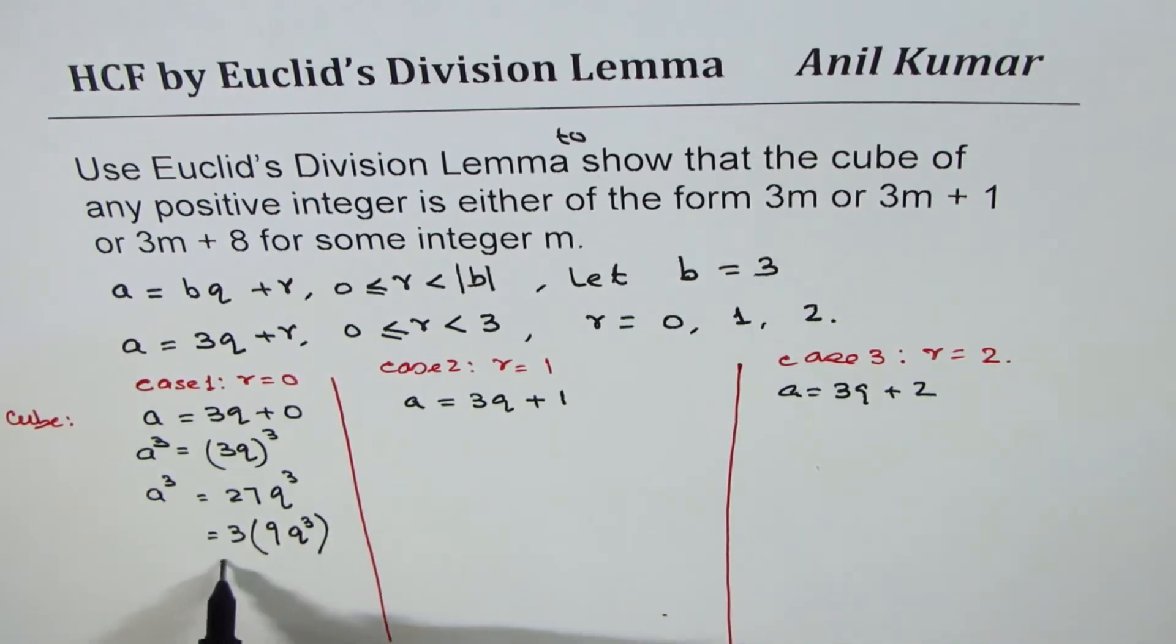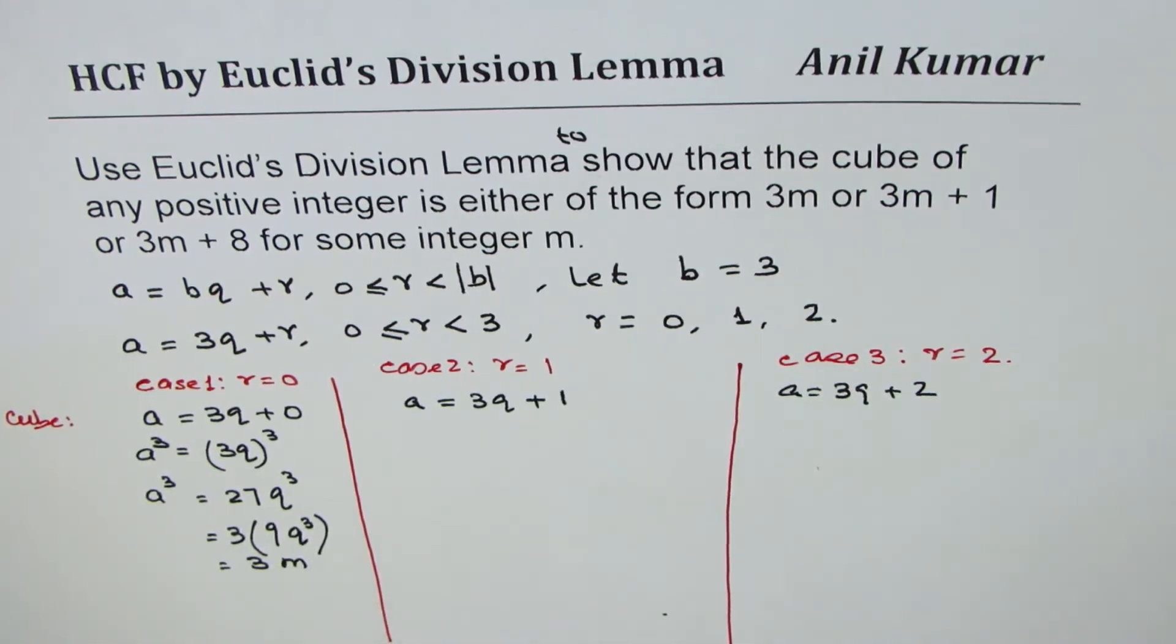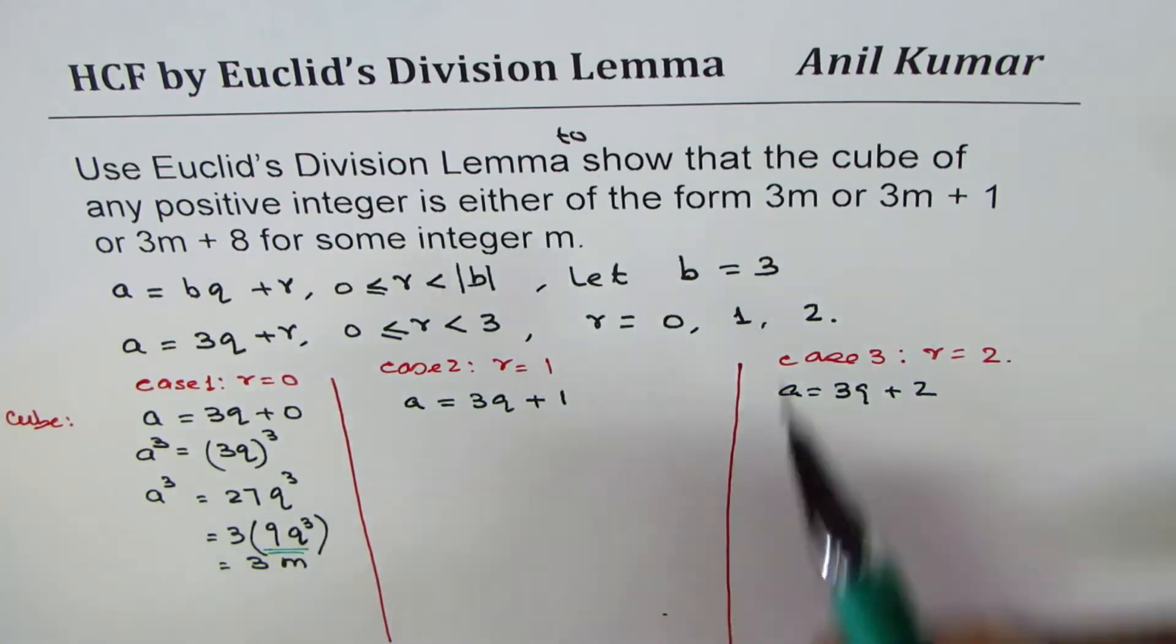And now I can write this as 3M, where M is equals to 9Q cube. So that is how we prove the first part.